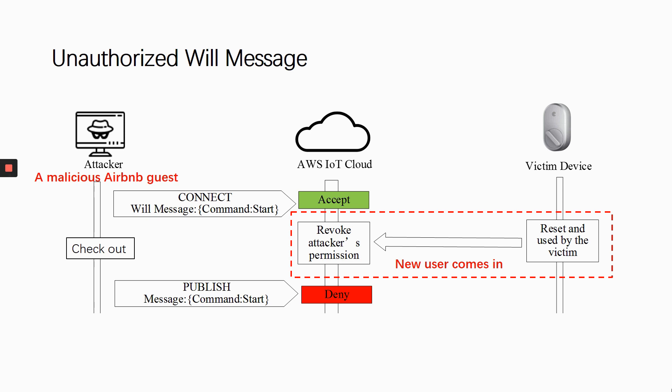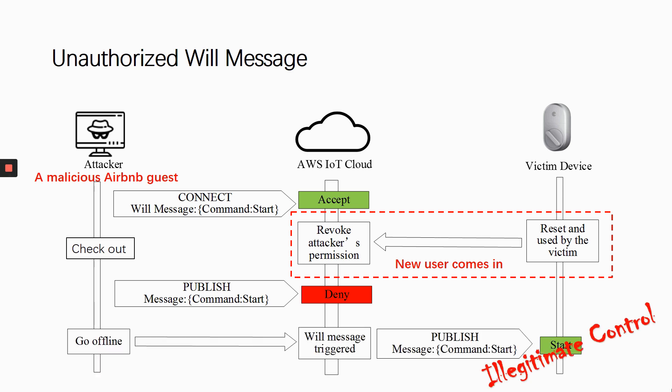For example, a malicious Airbnb guest can register a will message when he has access to the smart lock. Later, he checks out and a new user comes in. The rights of the previous guest will be revoked by the cloud, so the attacker can no longer publish to the topic of the lock. However, the attacker's will message will still be issued as soon as his client disconnects from the server, because this message was accepted and entitled to deliver as designed by MQTT. In this way, he can decide when to unlock the door by choosing the right time to go offline.